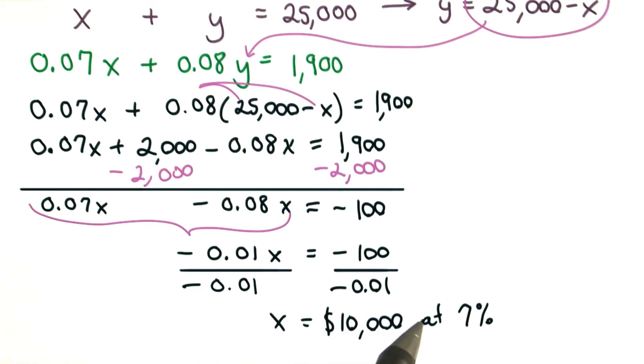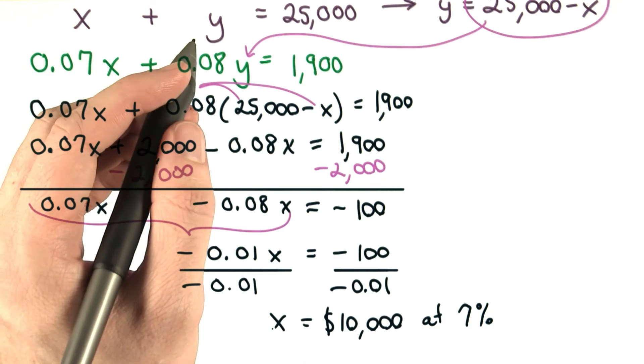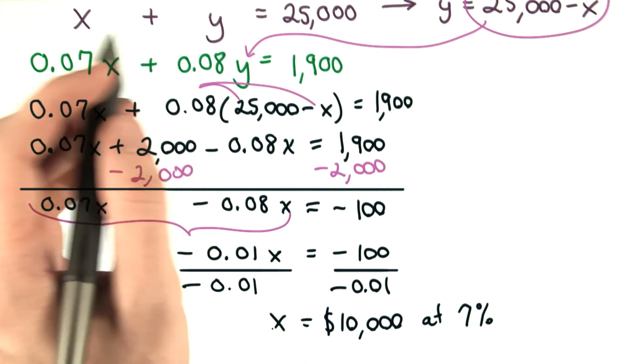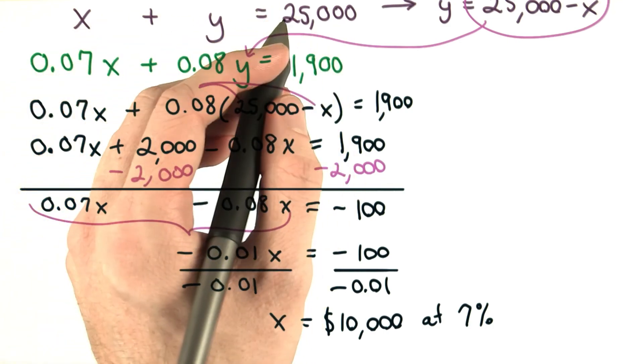which we invested at 7%. And remember, this is a system of equations, so we have two variables, x and y. Well, we know if x is $10,000, y must be $15,000, since those two have to add up to $25,000.